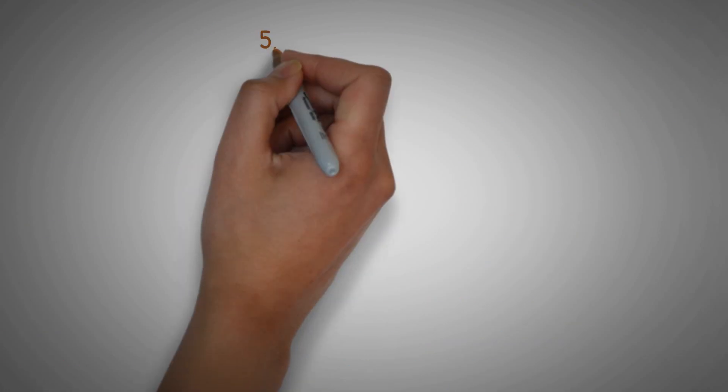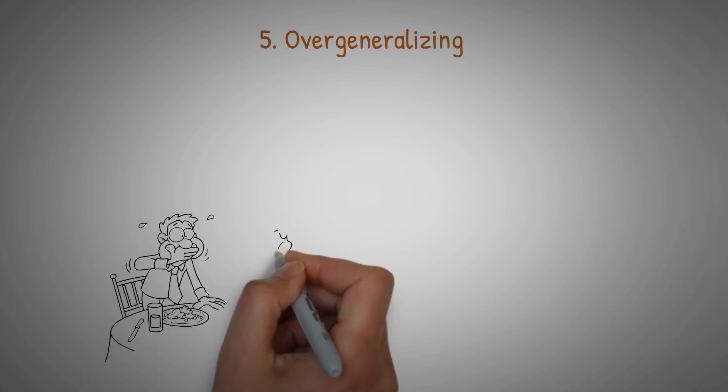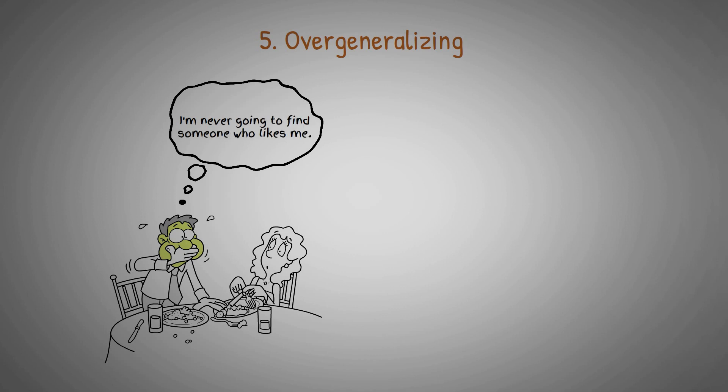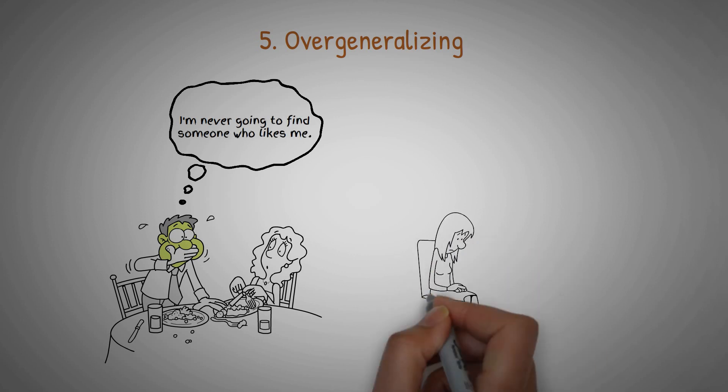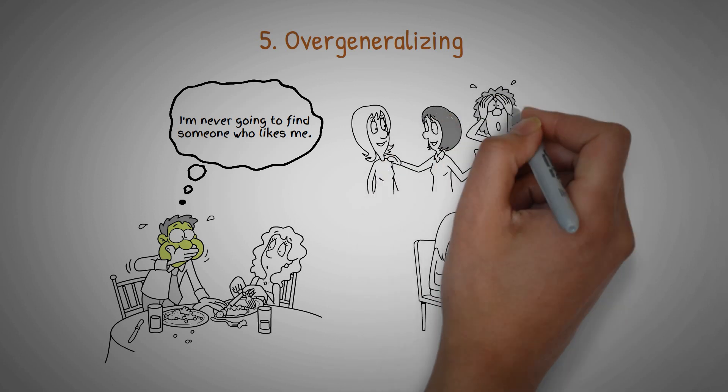Another common unhelpful thinking pattern is overgeneralizing. Let's say you had a bad date and it didn't go well. You might think to yourself, I'm never going to find someone who likes me. This kind of thinking can be really damaging to your self-esteem and can lead you to avoid future dating opportunities. It can also be really unhelpful because it's not based in reality and can lead to a lot of unnecessary stress.